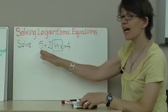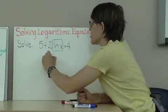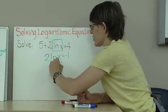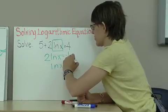Well, I'll subtract 5 from both sides and then divide by 2. This gives me 2 times the natural log of x equals negative 1. And so the natural log of x equals negative 1 half.